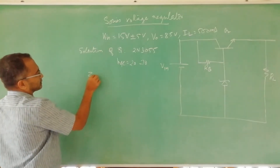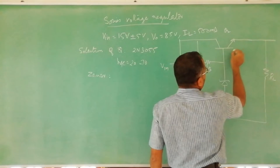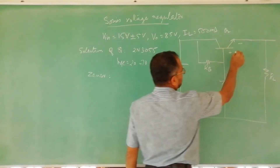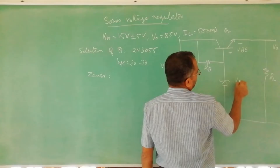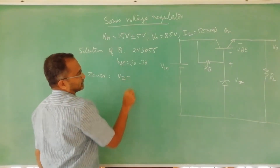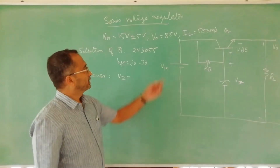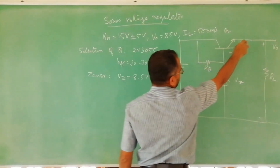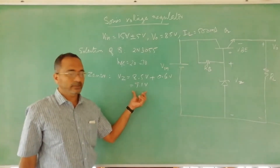Next is Zener diode selection. The transistor is in emitter follower mode because the output is taken from the emitter terminal. VEZ equals VO plus VBE. The output voltage VO is expected to be 8.5 volts, and VBE for the emitter follower is 0.5 to 0.6 volts, so VEZ should be 9.1 volts. We select a Zener diode of 9.1 volts.